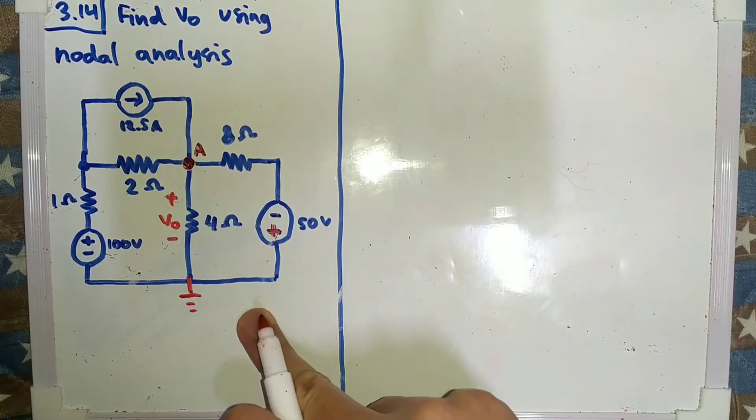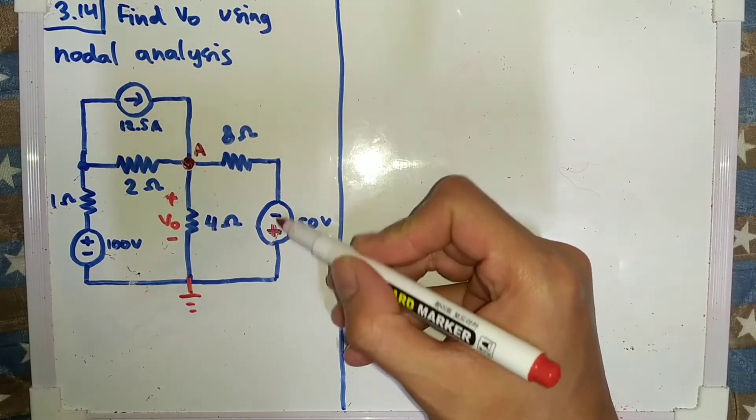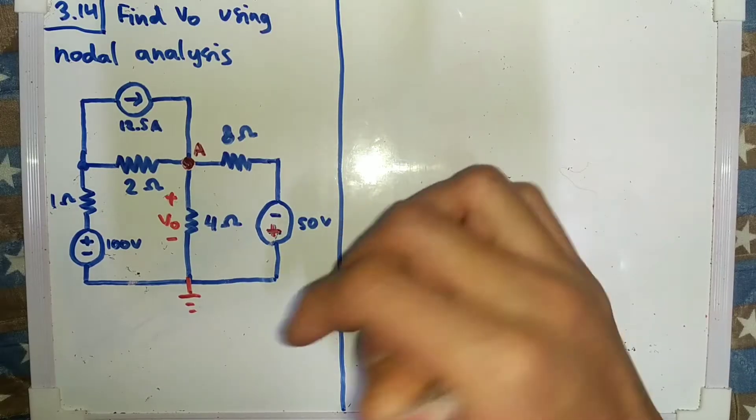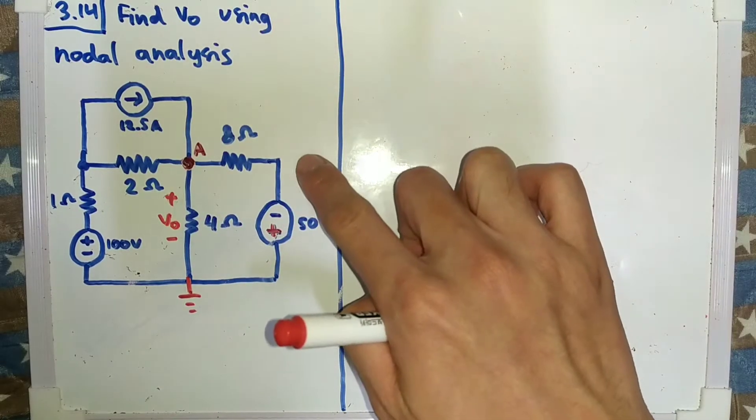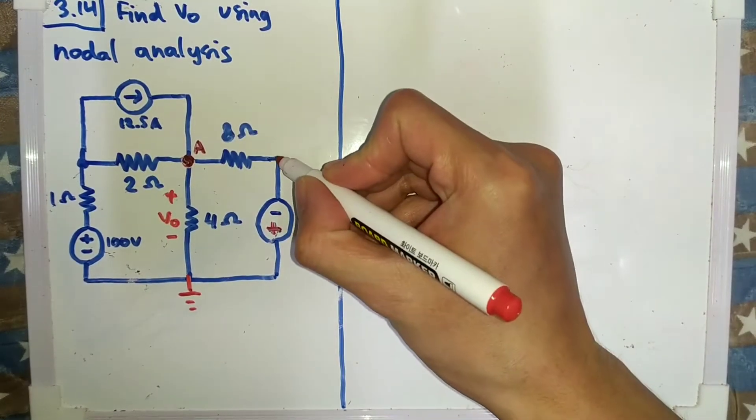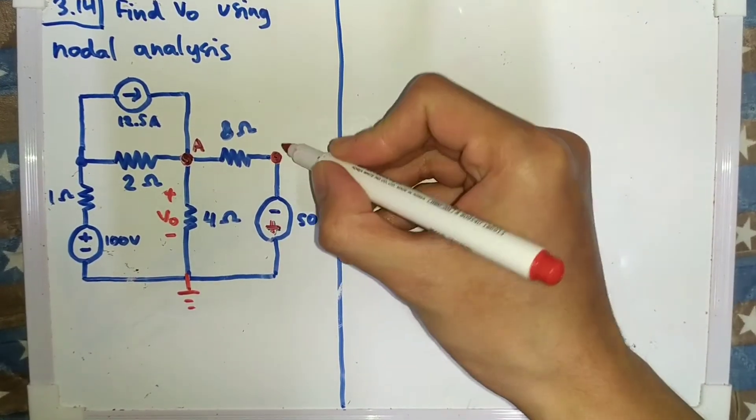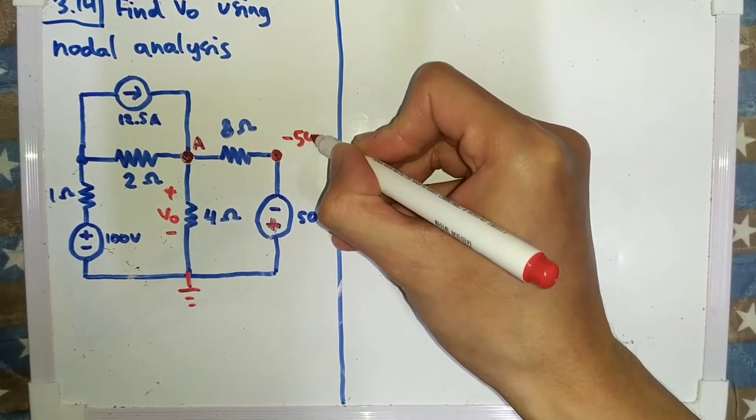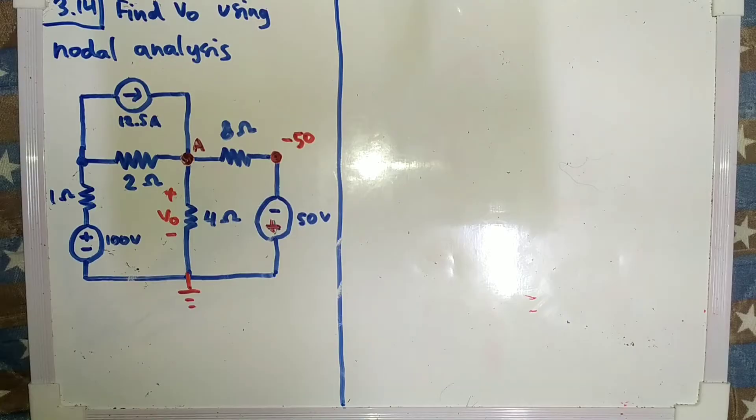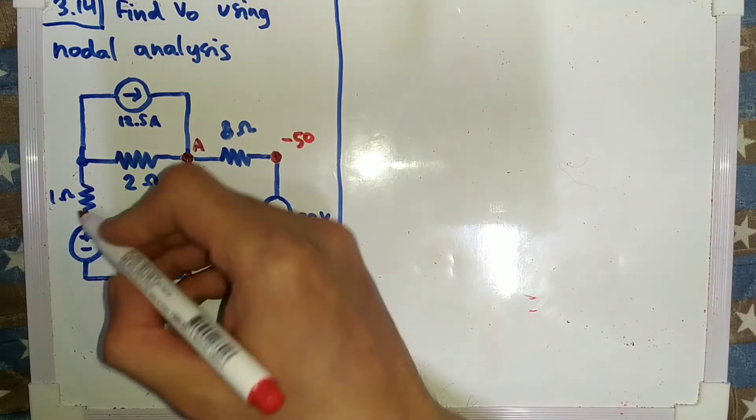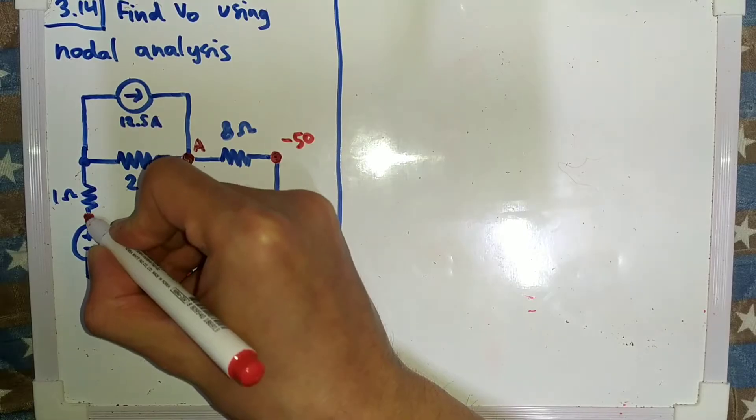From the ground the polarity is this one is positive and this one is negative. So in this node it has to be 50 volts lower than the ground, so here we will have the voltage of minus 50. And this one is 100 volts, so this will have value of 100 volts from the ground.